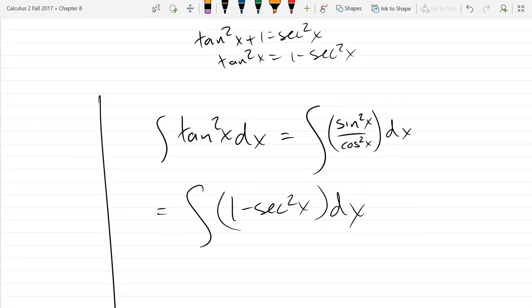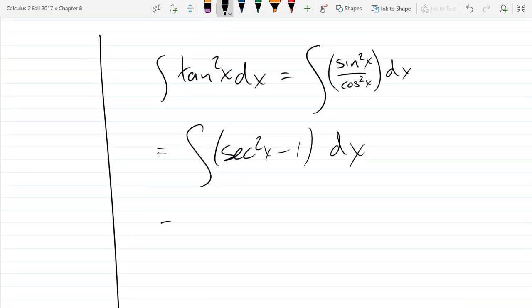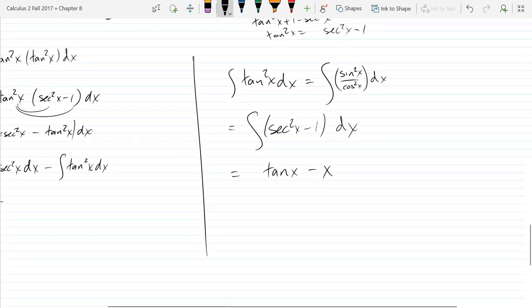Oh secant squared, wait, yeah it is, should be secant squared minus one. Absolutely. All right, so the antiderivative secant squared is what? Regular tangent, so this is a nice antiderivative. And antiderivative of one is x, so we got tan x minus x.